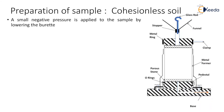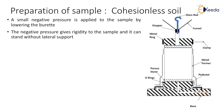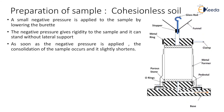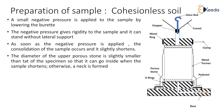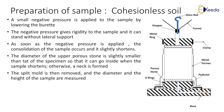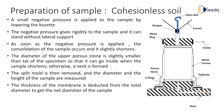A small negative pressure is applied to the sample by lowering the burette. The negative pressure gives rigidity to the sample so it can stand without lateral support. As soon as the negative pressure is applied, consolidation of the sample occurs and it slightly shortens. Generally the diameter of the upper porous stone is slightly smaller than that of the specimen so that it can go inside when the sample shortens, otherwise a neck is formed. The split mold is then removed and the diameter and height of the sample are measured. The thickness of the membrane is deducted from the total diameter to get the net diameter of the sample.